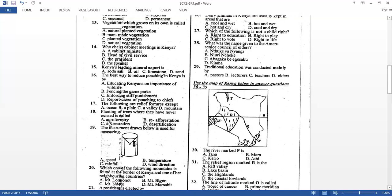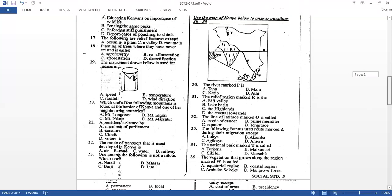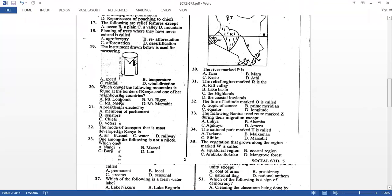Agroforestry means you grow crops at the same time you're also growing trees. Then the instrument here, all of you can see this is a rain gauge and it is used to measure amount of rainfall. Which of the following mountain is found at the border of Kenya and one of her neighboring countries? So remember the highest mountain in Kenya is Mount Kenya. Then Mount Elgon, the second highest mountain in Kenya is found at the border of Kenya and Uganda. So our answer is Mount Elgon.